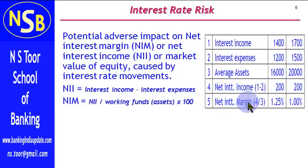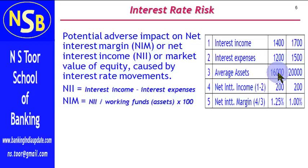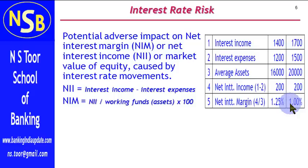But when we look at Net Interest Margin, there is a change. The Net Interest Margin was 1.25% in the first year, calculated on Average Assets of 16000. In the second year, the Net Interest Income of 200 is on Average Assets of 20000, so as a percentage it has come down to 1%. This decline from 1.25% to 1% is the result of Interest Rate Risk.